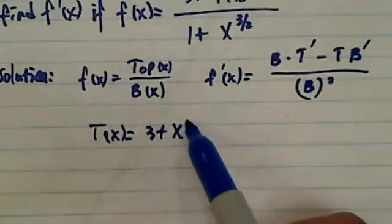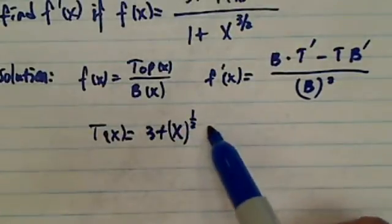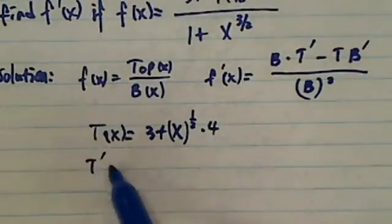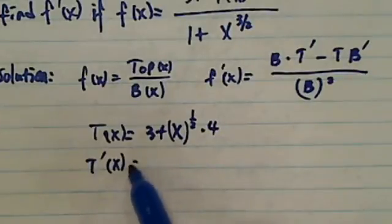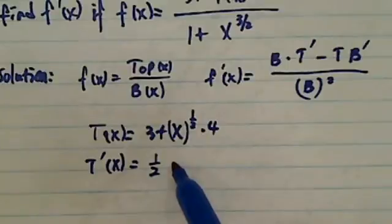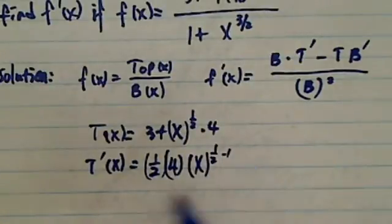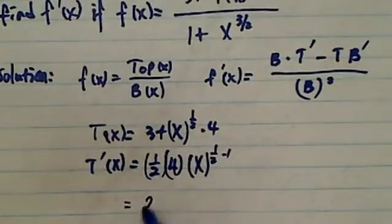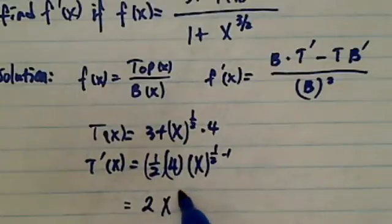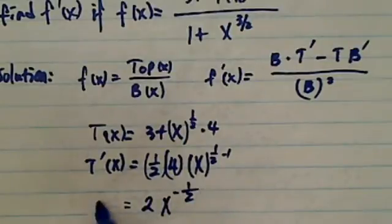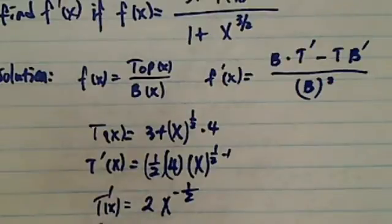Then top prime of the function is really half... let's see, half times 4, and then x to the half minus 1. So this one is equal to 2 times x to the minus half. I'm not sure if this is the one you probably had trouble with.